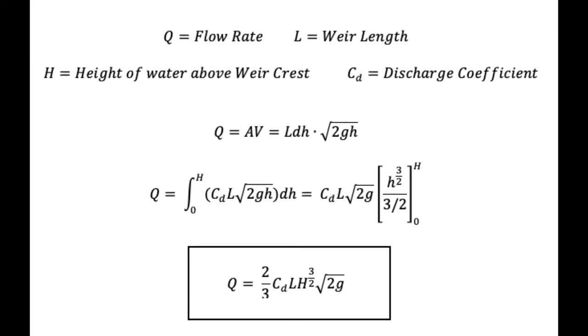The weir equation is derived from flow rate, which is equal to the cross-sectional area multiplied by the fluid velocity. Consider flow over a flat weir in a rectangular channel with length L and differentiable height dH. The theoretical velocity comes from the Bernoulli equation and is equal to the square root of 2GH.